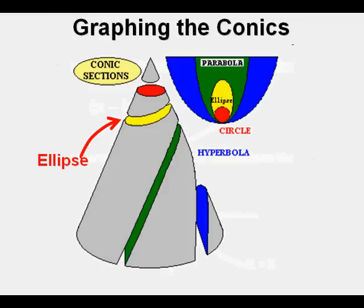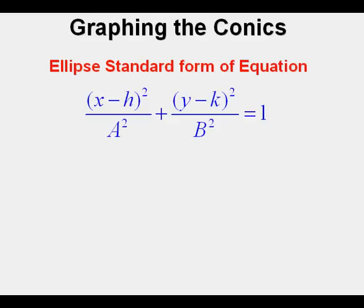The next conic we'll look at is the ellipse. It comes from a cone sliced at a non-vertical slant and is here shown as a yellow elliptical slice. The standard form of the equation of an ellipse is similar to that of a circle. There is x minus h quantity squared over a squared plus y minus k quantity squared over b squared, and all that is equal to 1.